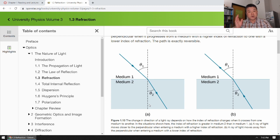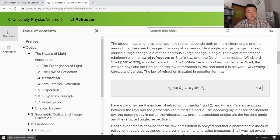Or if you reverse the direction, then when the light rays go from medium 2 to medium 1, it bends away from the surface normal. And this is quantitatively described by Snell's law.